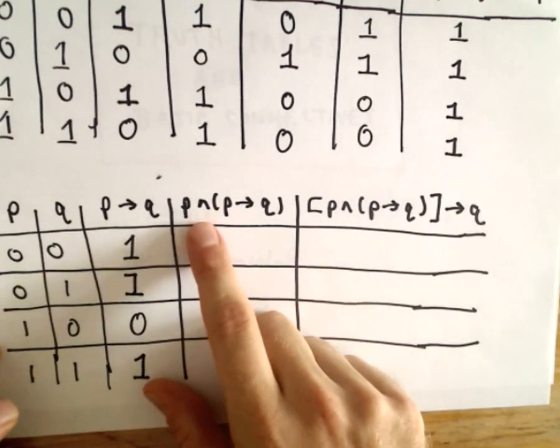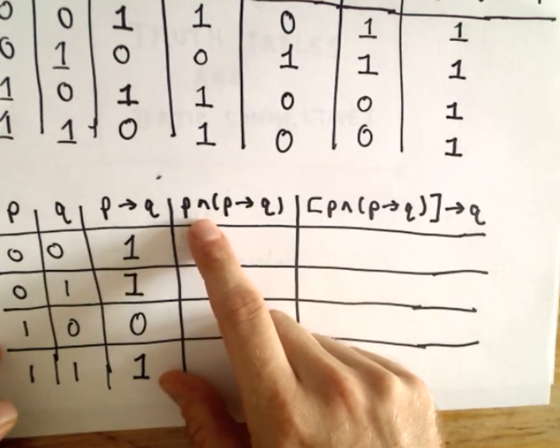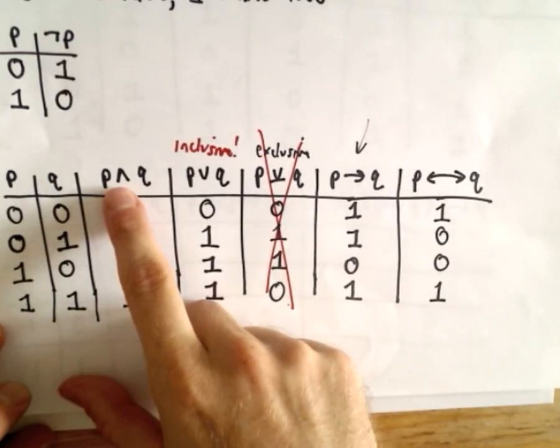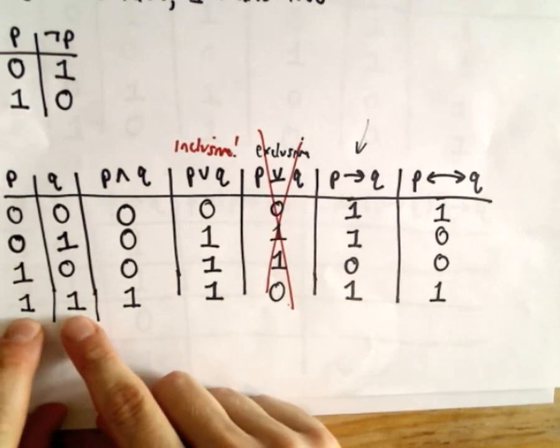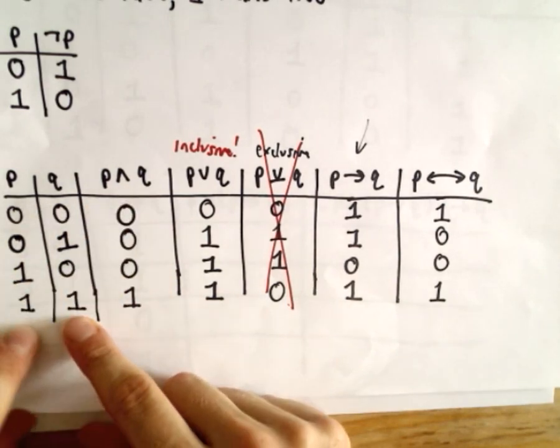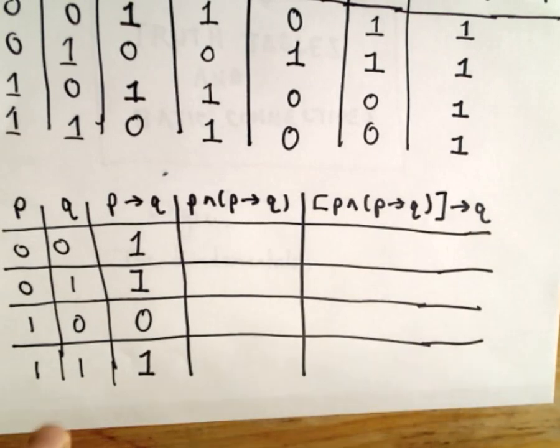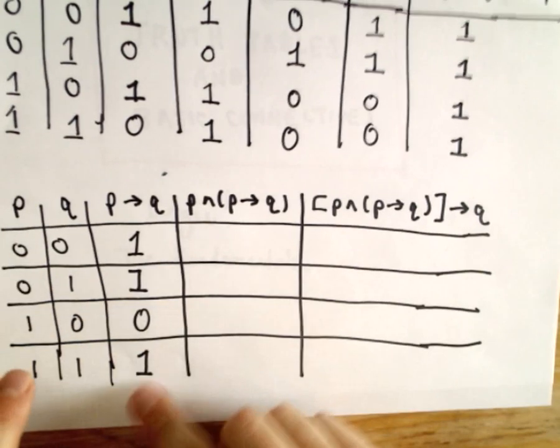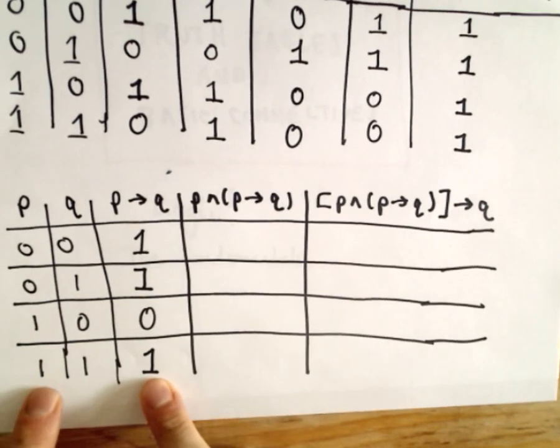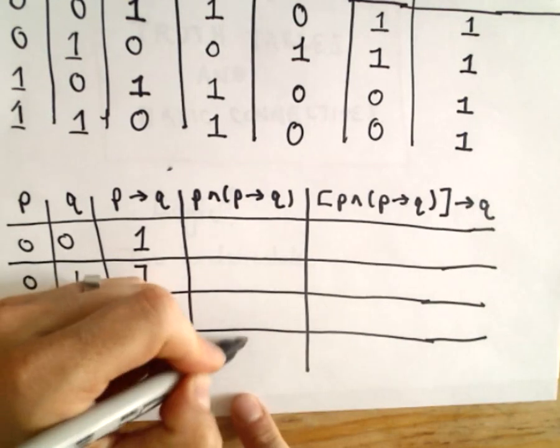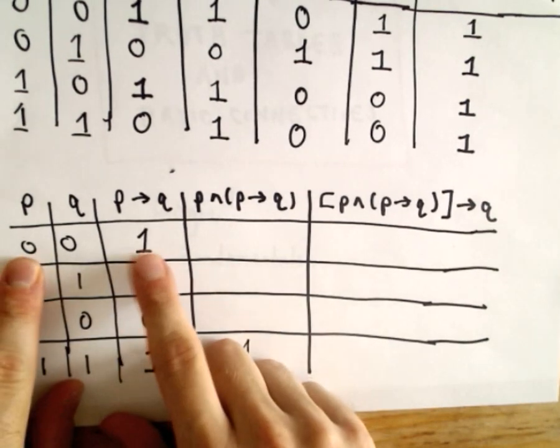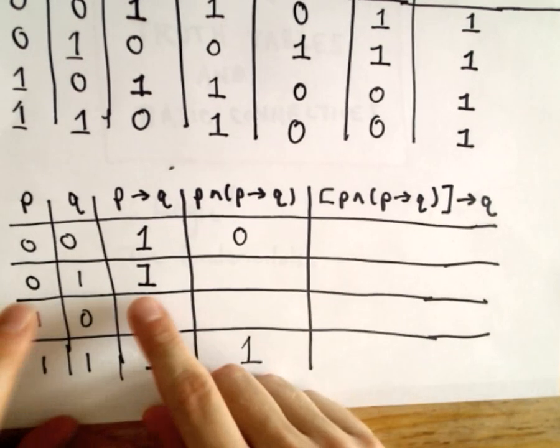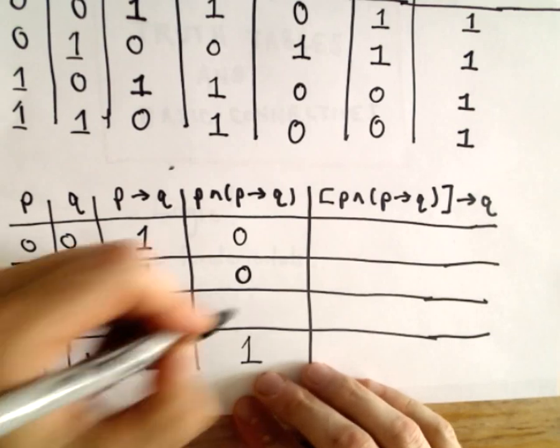Now we're looking at the and statement. So, again, an and statement, the only time an and statement is true, for an and statement to be true, both of the other statements have to be true. Okay, so we're looking at the first column and the third column. So I'm looking for wherever they're both true. Well, the only place that happens is in the very bottom row, so that'll be true. First and third column, they're not both true, so the and statement will be false. It'll be false. It'll be false.